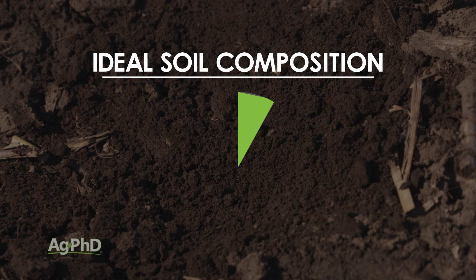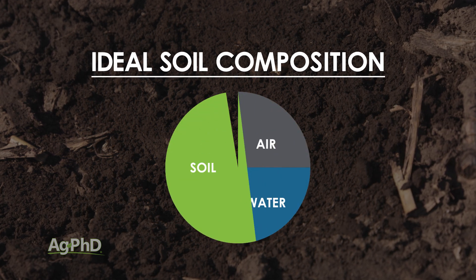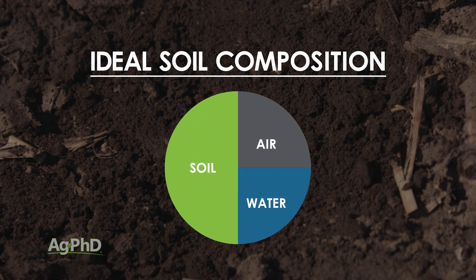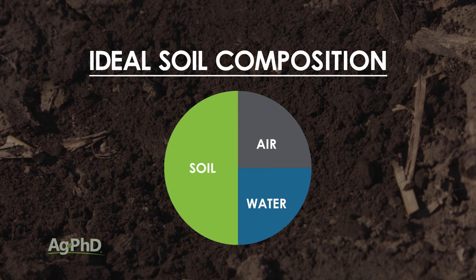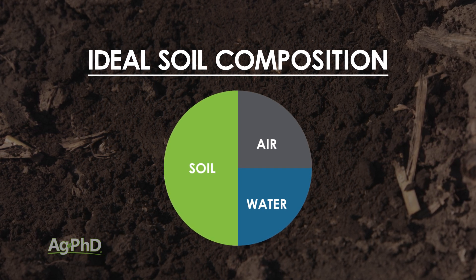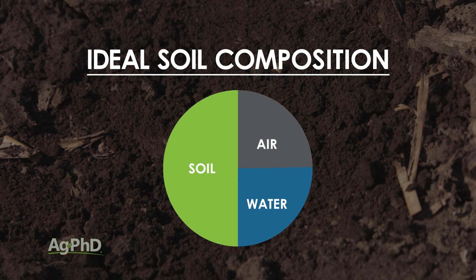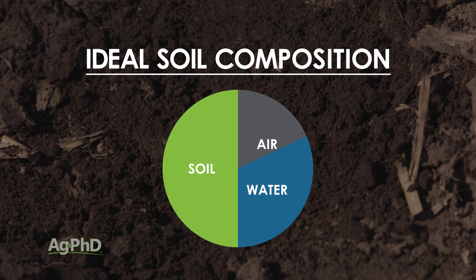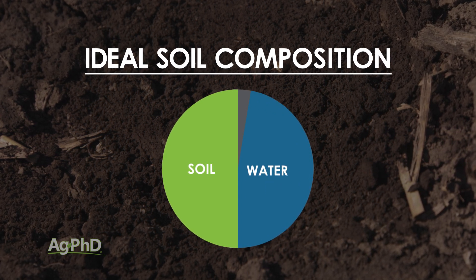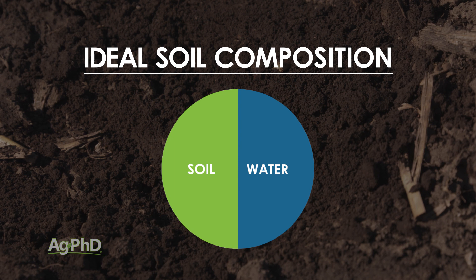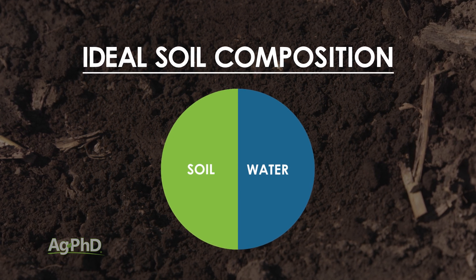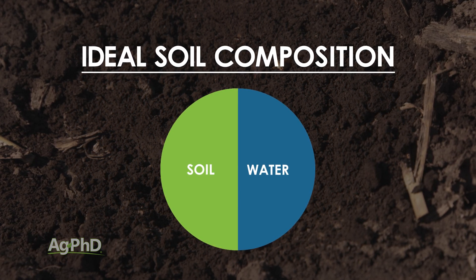If you go back to maybe the first day you went to college and had a soils class, what they're usually going to tell you is your soil should be comprised of roughly 50% soil, 25% water, and 25% air. Well, what happens is if you get too much water in that soil — in other words, the water table rises — now instead of having 25% air in there, you might have 0% air and 50% water. That's not a good ratio.